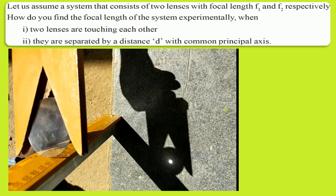Next question: Let us assume a system that consists of two lenses with focal lengths f1 and f2 respectively. How do you find the focal length of the system experimentally when two lenses are touching each other, or when they are separated by a distance d with a common principal axis?